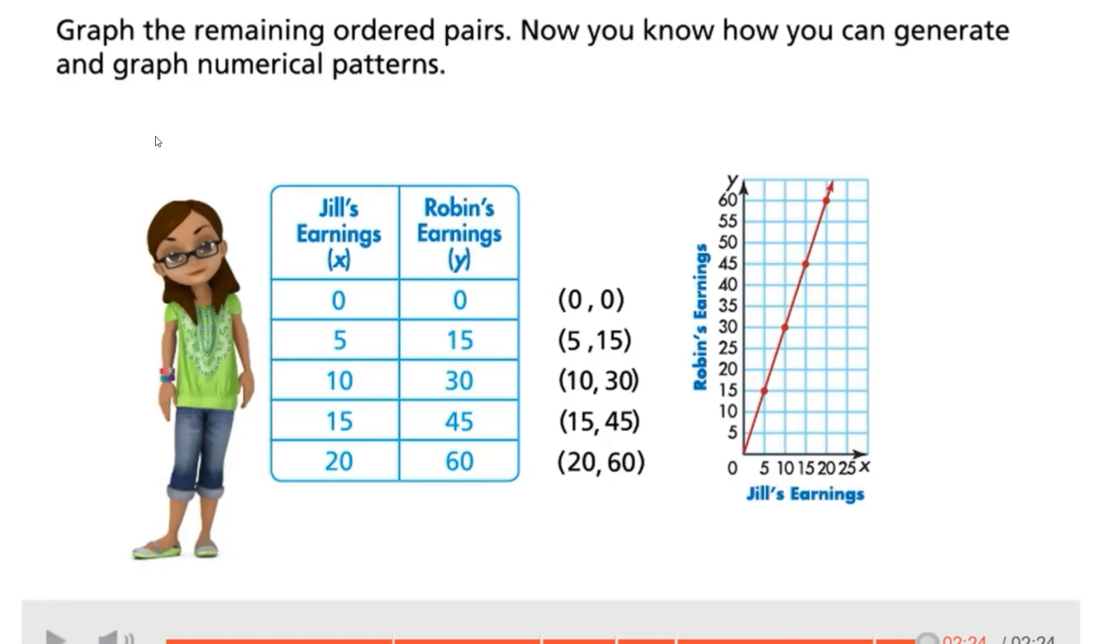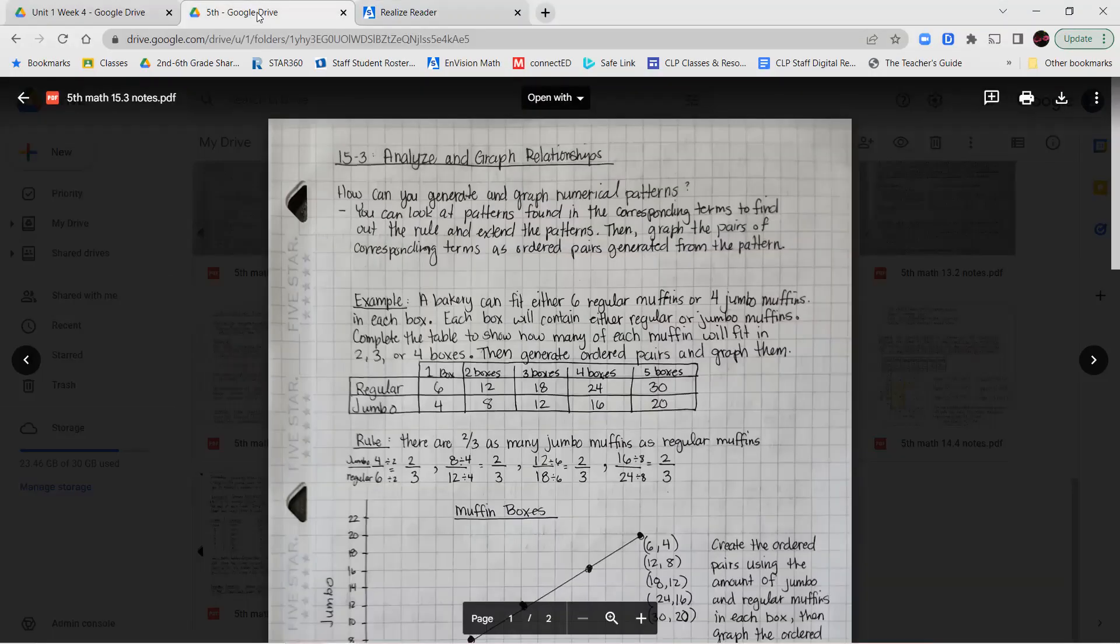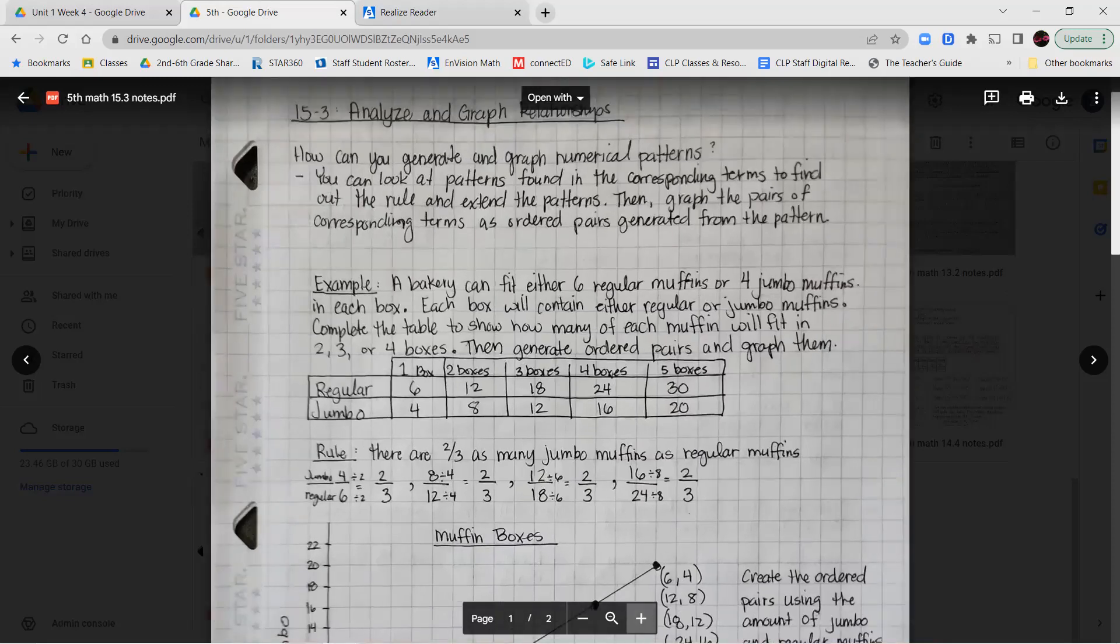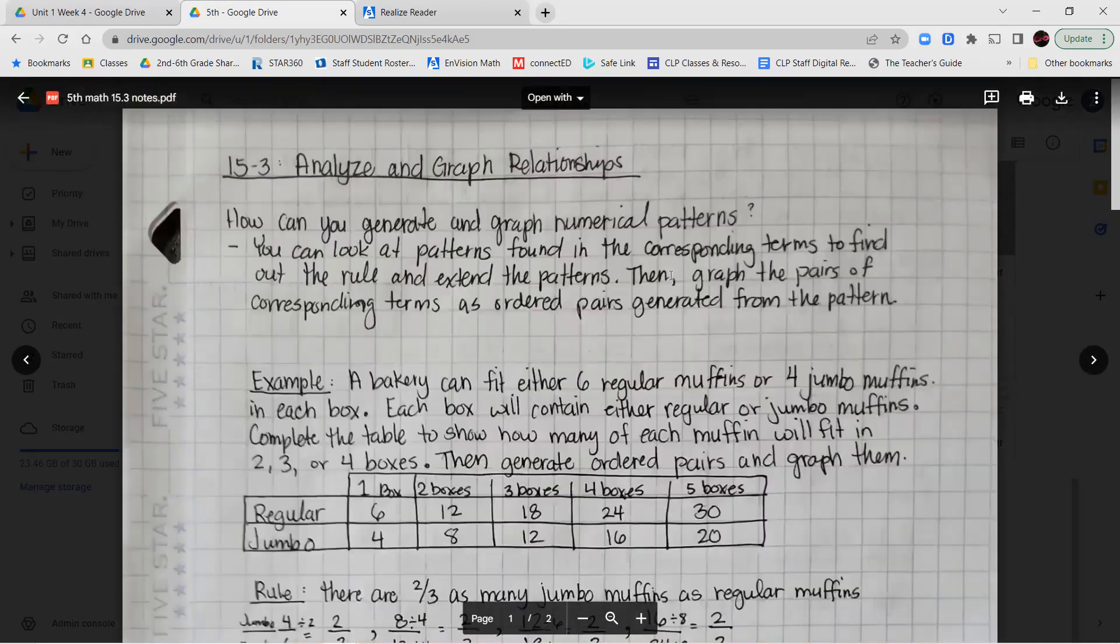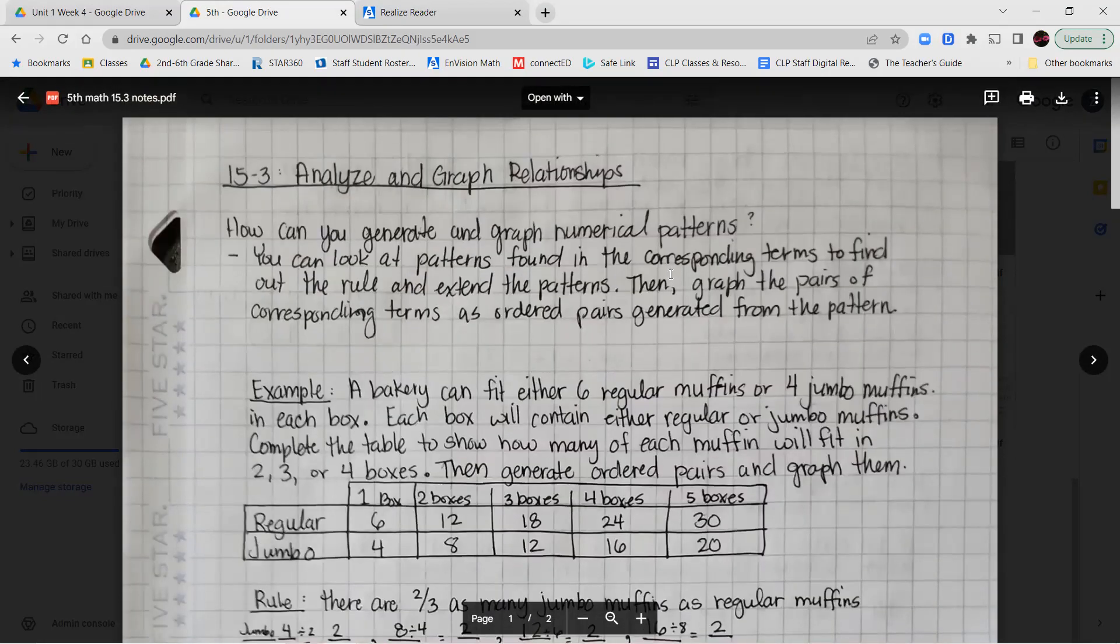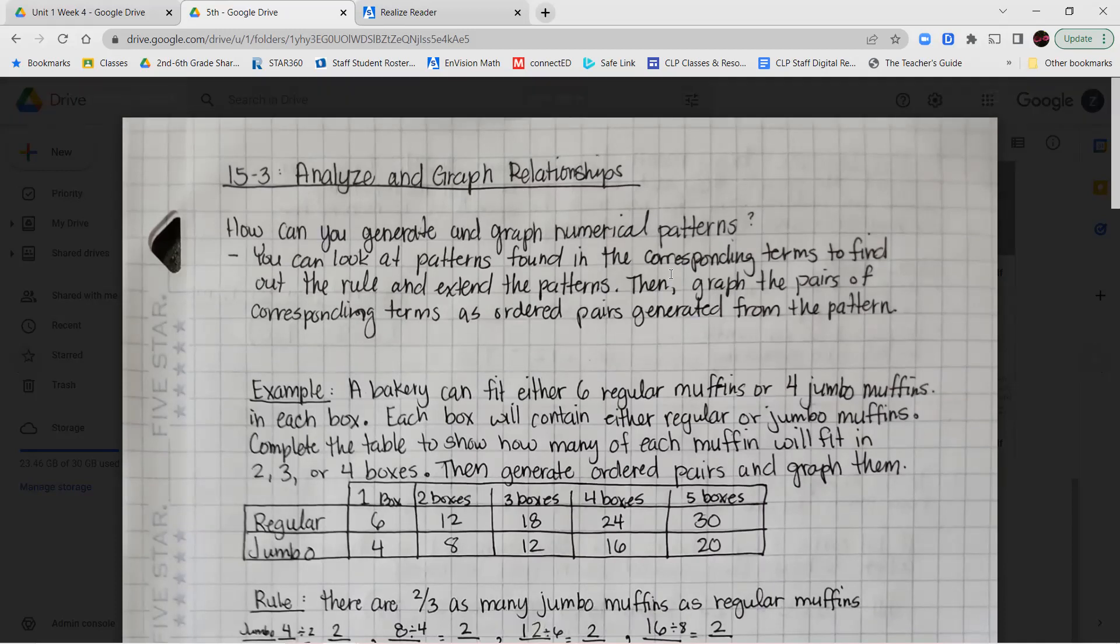Alright, let's go ahead and get into our notes and our guided practice. Now our focus question during this lesson is going to be how can you generate and graph numerical patterns? So you can take a look at the patterns that are found in the corresponding terms to find out the rule and then extend that pattern. Then you can graph the pairs of corresponding terms as ordered pairs that you generated by extending that pattern.